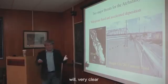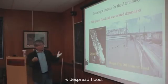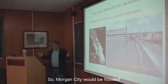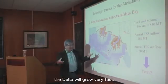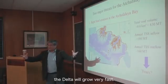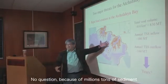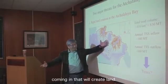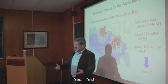For the Atchafalaya, it would be widespread flooding — Morgan City would be flooded. The delta will grow very fast, with millions of tons of sediment coming in, creating land — until one day it shifts again.